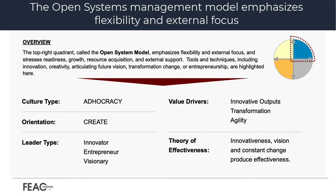A competing management model to the internal process model is the open systems model, which emphasizes flexibility and an external focus. The top quadrant, called the open systems model, stresses readiness, growth, resource acquisition, and external support. Tools and techniques including innovation, creativity, articulating future vision, transformation change, or entrepreneurship are highlighted here.